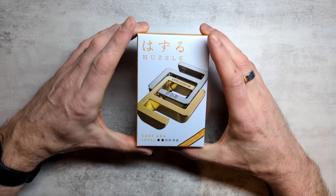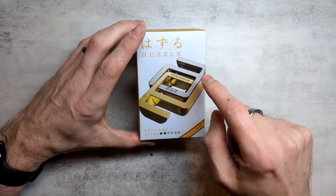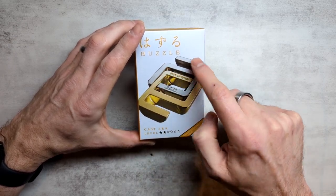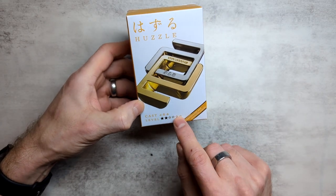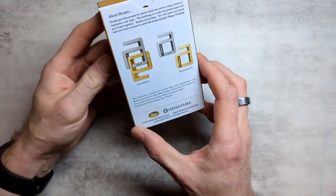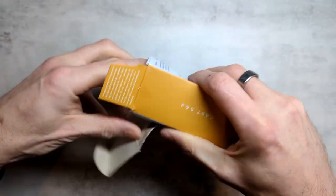Alright, this is another Hanayama Huzzle Puzzle. This is the Cast A and A, and I guess you can see why it's called A and A, because you have a Silver A and a Gold A linked with each other. It's only level 2 out of 6, so I'm expecting this to be fairly easy, but you never know with Hanayama, so let's see.